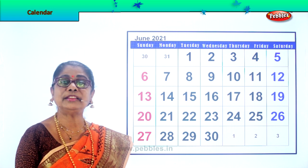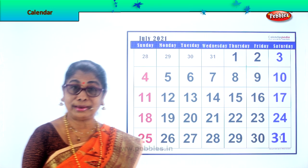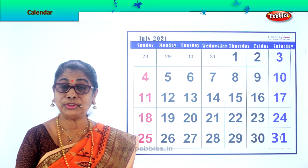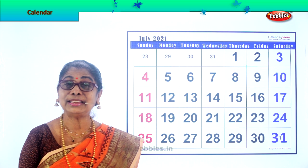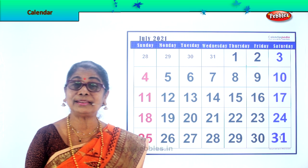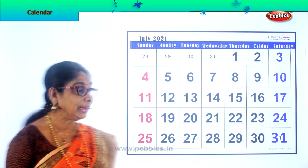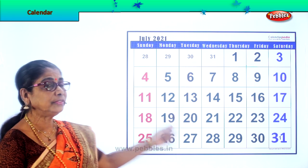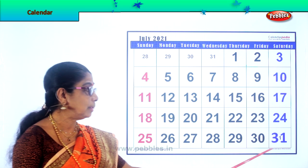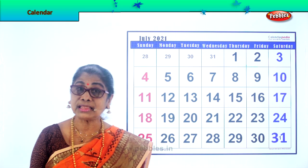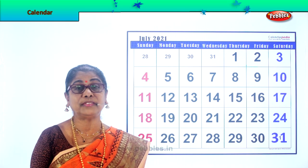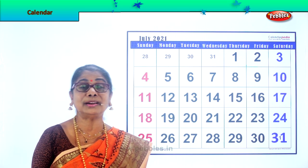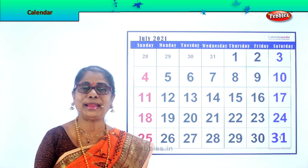Next is the month of July. You are getting on with your studies, excited, learning new things. The month of July has how many days? 31 days. It's a very long month — lots to learn, lots to prepare.